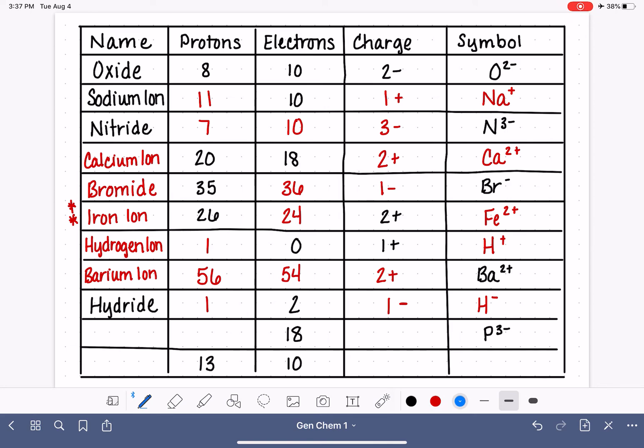Notice something kind of unusual. Hydrogen is capable of forming either a cation or an anion, a positively charged or negatively charged ion. And that's something that is special about hydrogen.